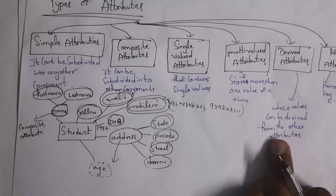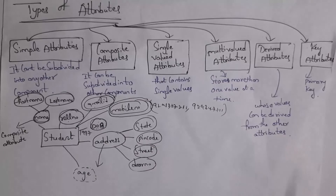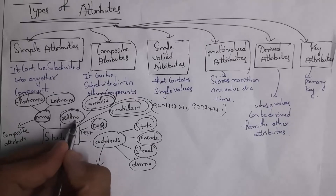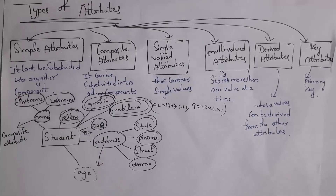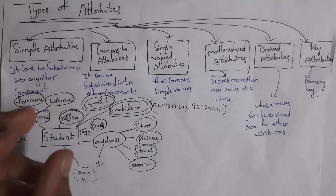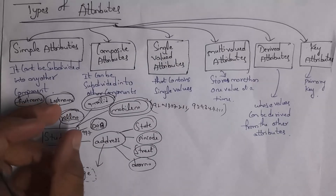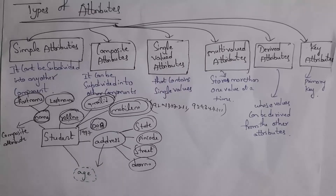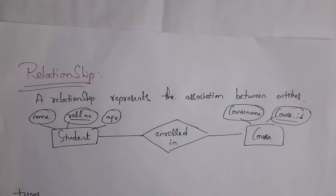The last type is key attribute. Key attribute is nothing but the primary key. For example, the roll number attribute with an underline is the key attribute. Whenever you give primary key to a particular attribute, you must give different roll numbers for different students and it will not accept null values. These are the various types of attributes.